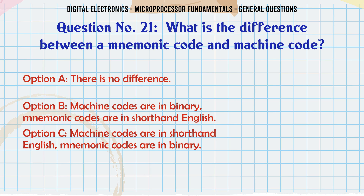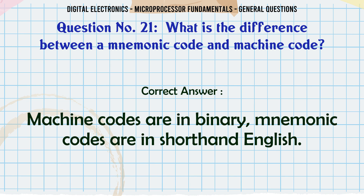What is the difference between a mnemonic code and machine code? A. There is no difference, B. Machine codes are in binary, mnemonic codes are in shorthand English, C. Machine codes are in shorthand English, mnemonic codes are in binary. The correct answer is: Machine codes are in binary, mnemonic codes are in shorthand English.